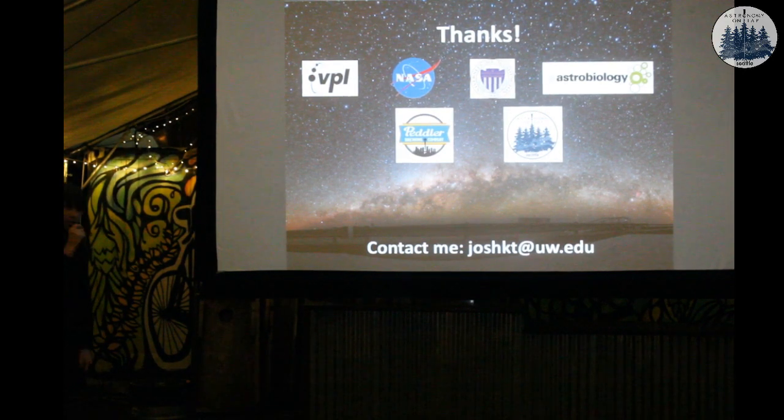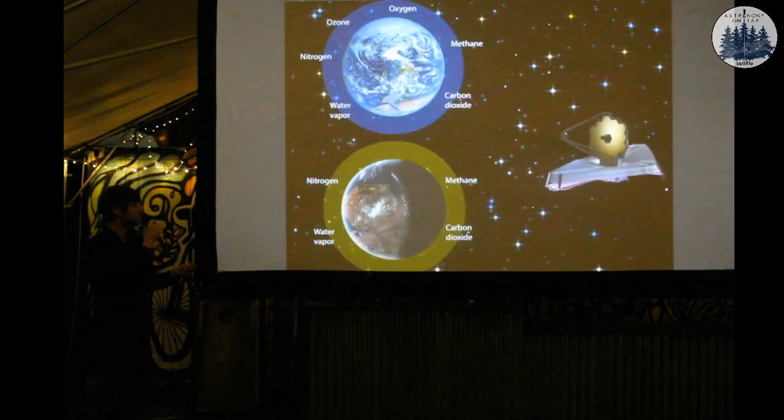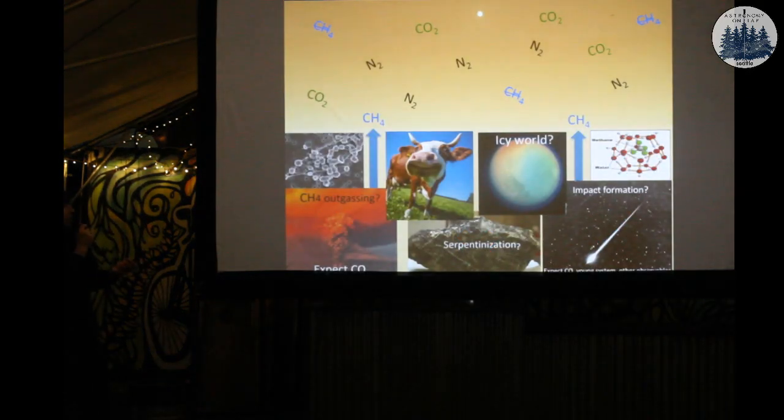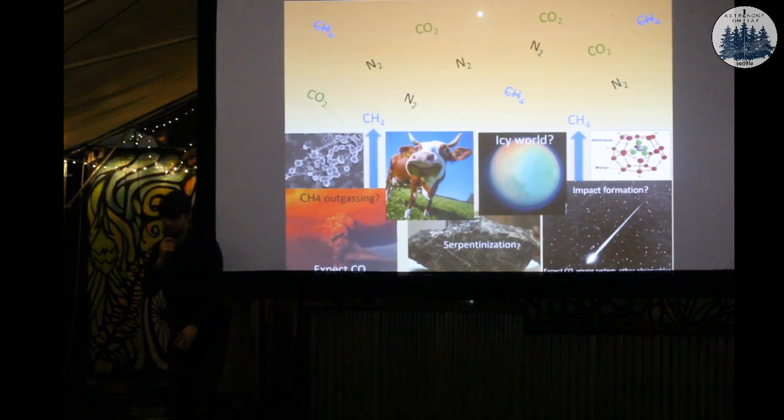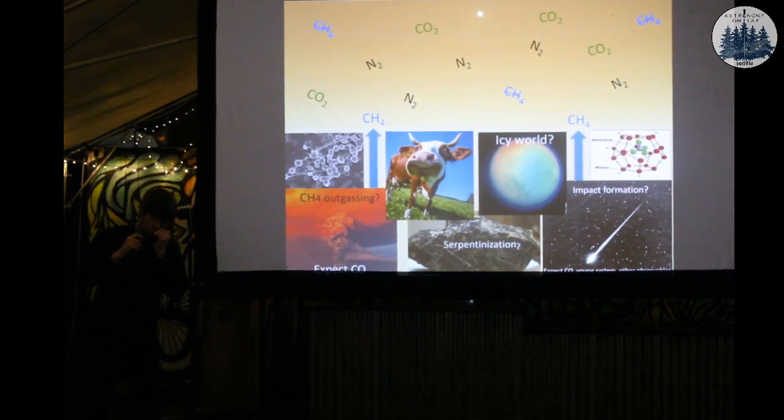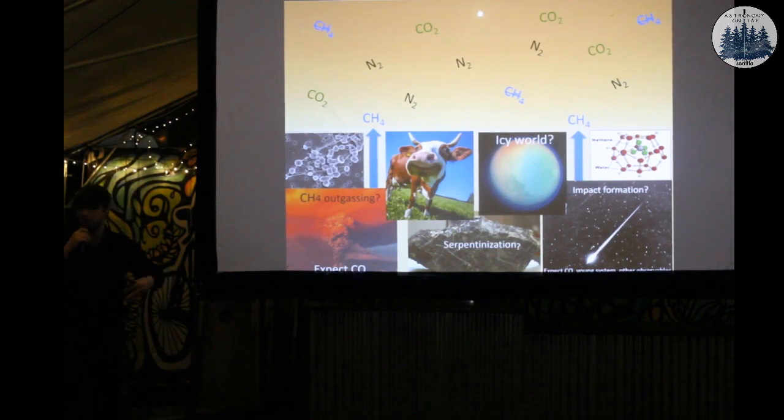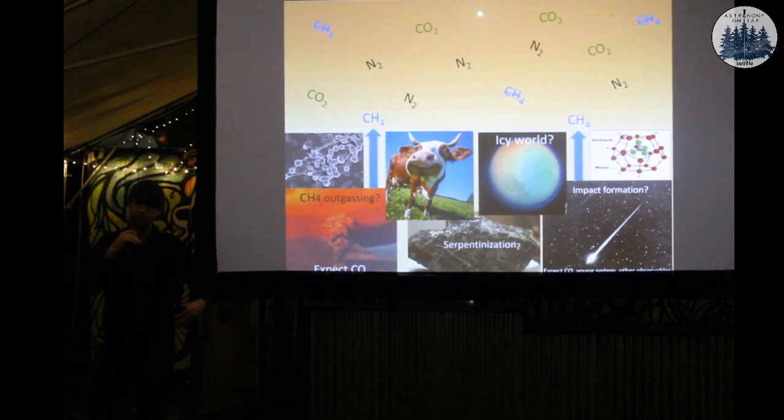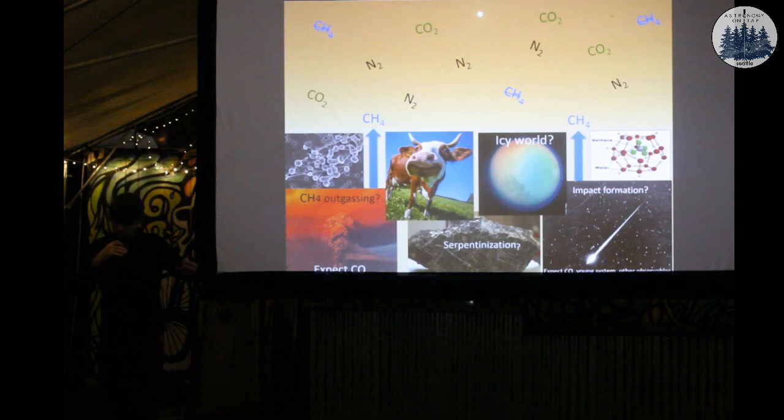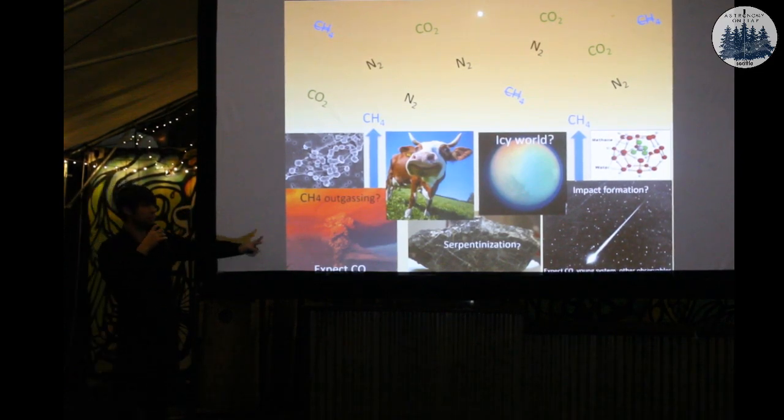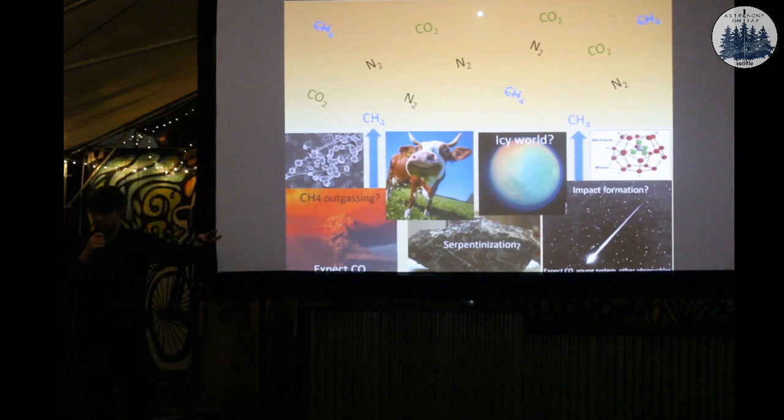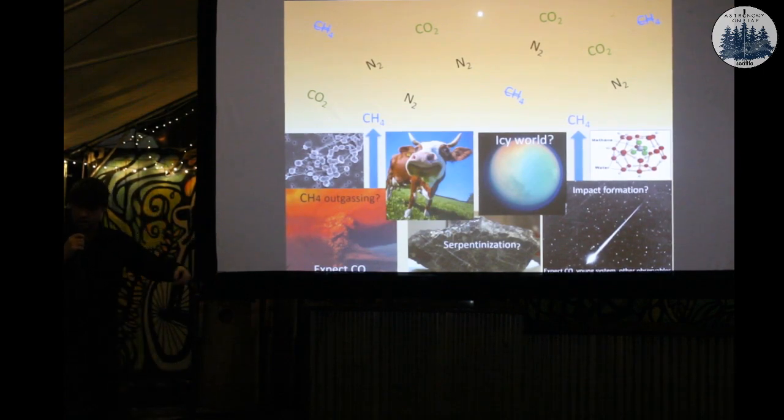So the question was, what is serpentinization? It's something that I glossed over on an earlier slide. So this is a process that might produce methane without life. So water reacts with rock, in the sea floor just releases hydrogen gas, and that hydrogen gas can then react with CO2, which is hanging around and produce methane. So potentially you can make a lot of methane this way. We've done some calculations to show it. It's still considerably less than what we need for life.